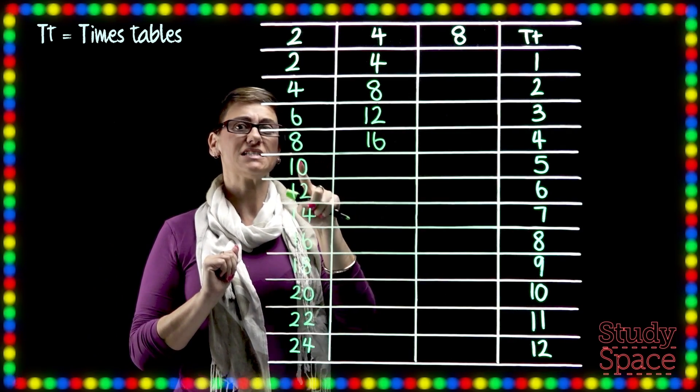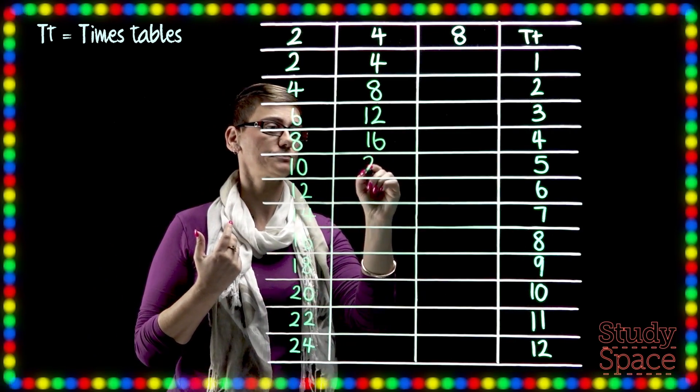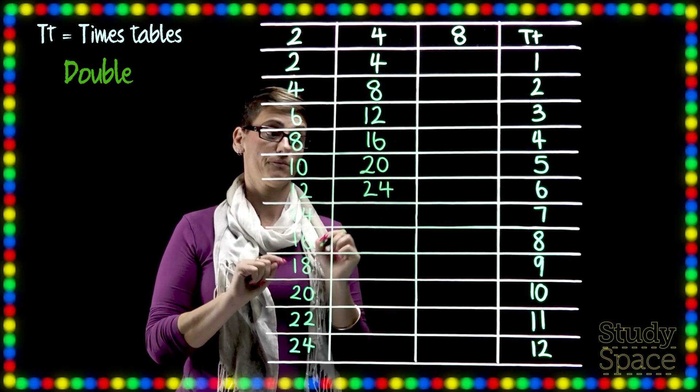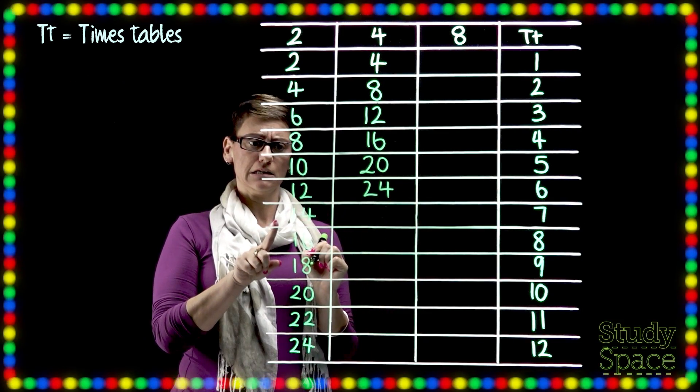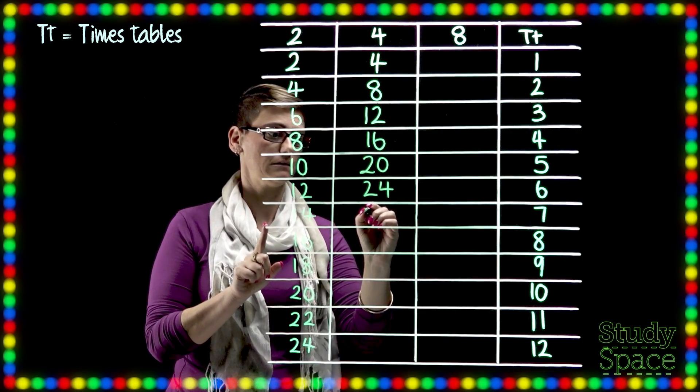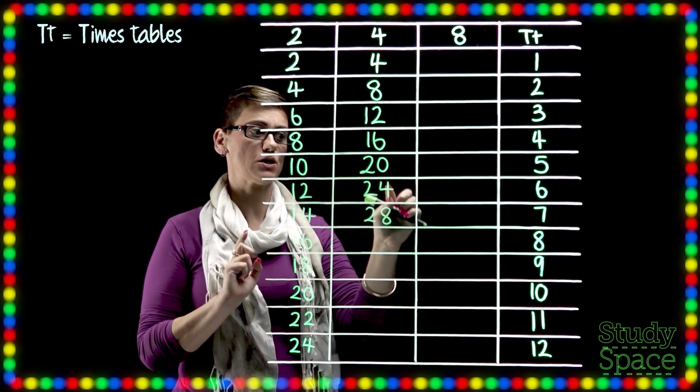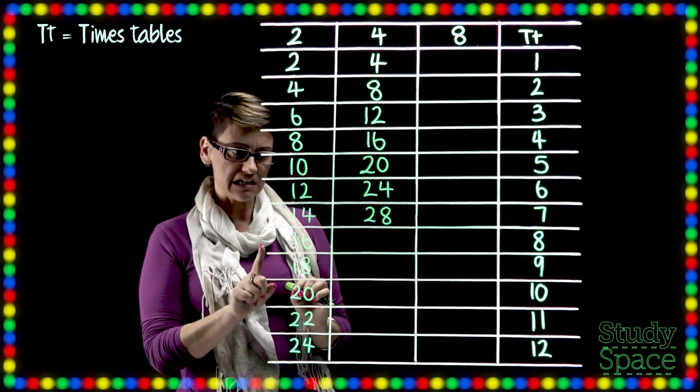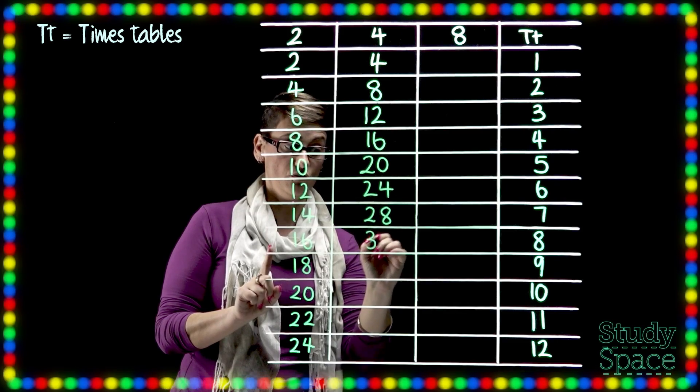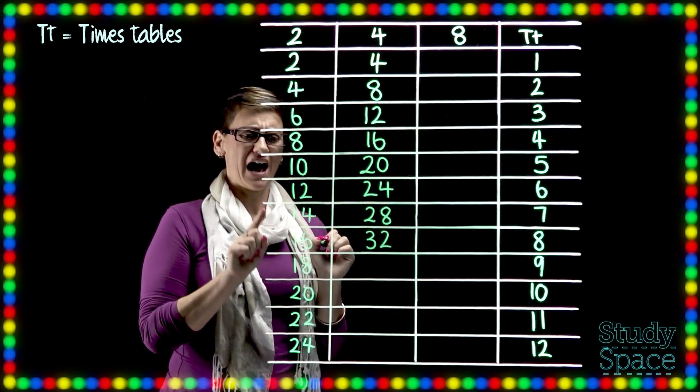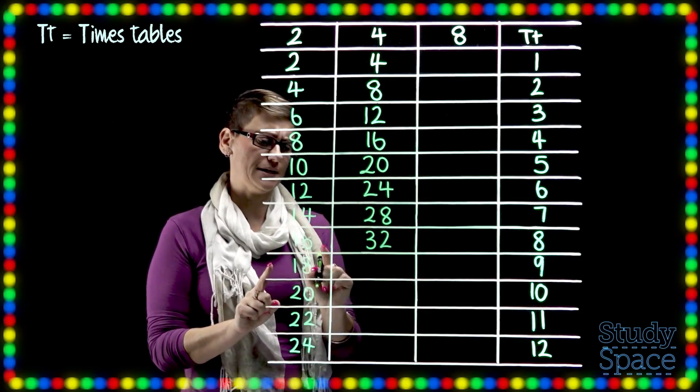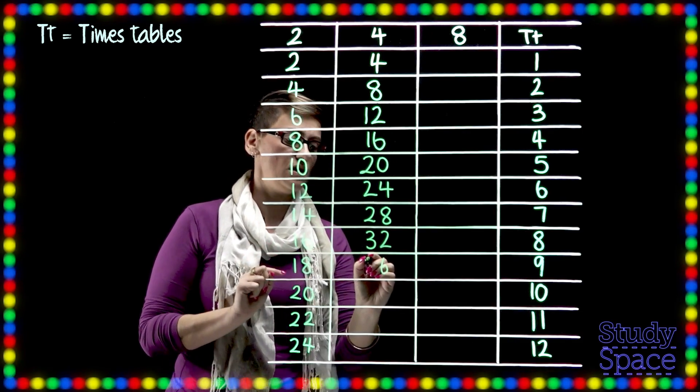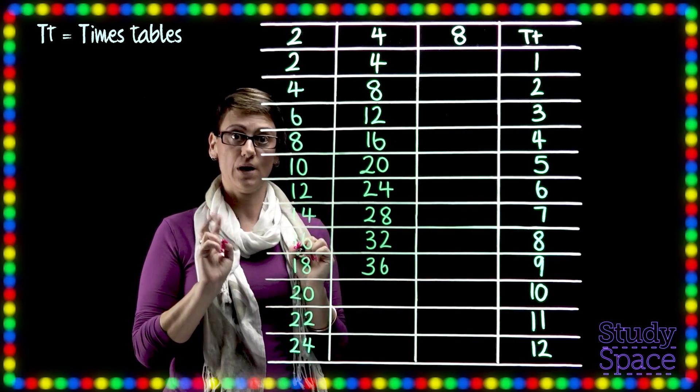Okay so now we double the 10 to get 20. Double 12 to get 24. Double 14 to get 28. So if you're not sure you just make sure you add an extra 4 to the previous number. Double 16 is 32. Double 18. Now we're getting a bit tricky. Okay so let's try this. 2 8's are 16. Plus 2 plus 1 more is 36. So that's 2 eighteens.